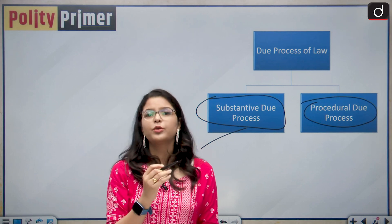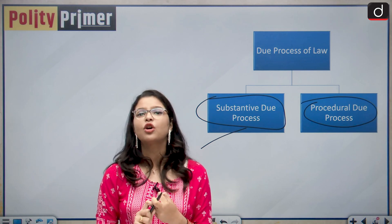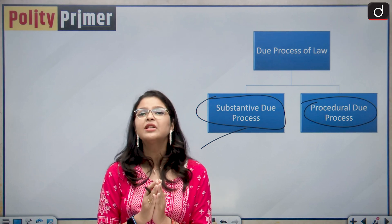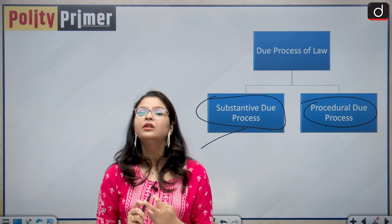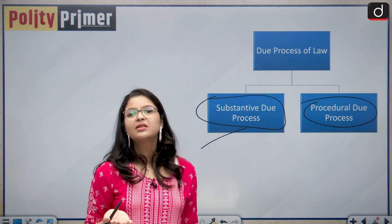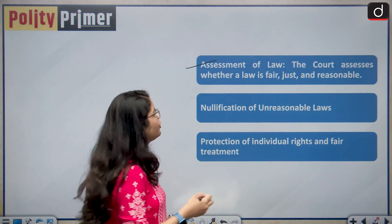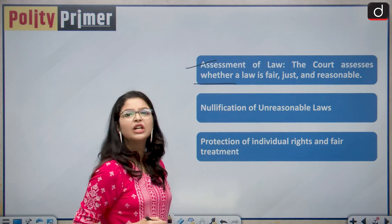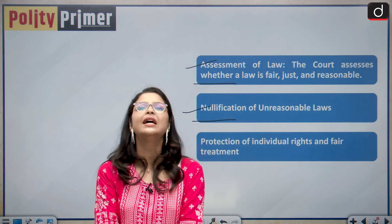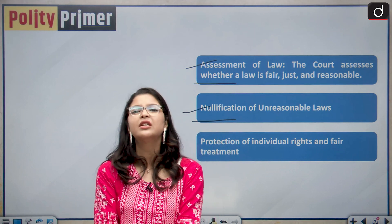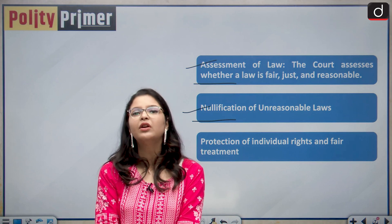The doctrine of due process of law examines both the substantive and procedural aspects of the law, and the courts act as an arbiter of both. To summarize: first, the court assesses whether the law is just, fair, or reasonable. Second, there is nullification of unreasonable laws — the court is empowered to declare an unjust, arbitrary law to be void.